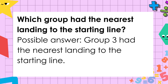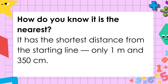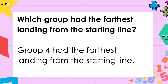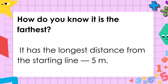Class, based on the table I have shown you, which group had the nearest landing to the starting line? Group 3 had the nearest landing to the starting line. How do you know it is the nearest? It has the shortest distance from the starting line, which is only 1 meter and 350 centimeters. Which group had the farthest landing from the starting line? Group 4 had the farthest landing from the starting line. How do you know it is the farthest? It has the longest distance from the starting line, which is 5 meters.